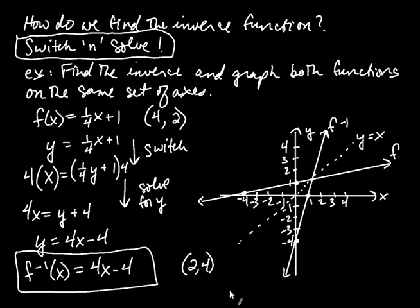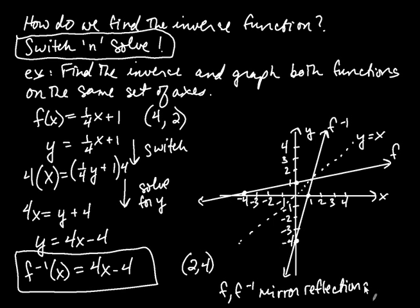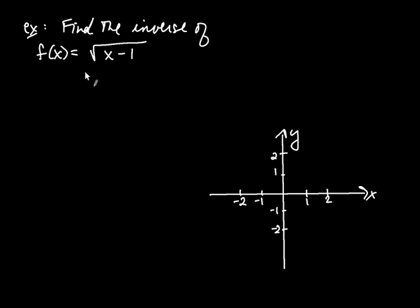Let's write that down: f and f⁻¹ are mirror reflections across the line y = x. Now that we know how to find the inverse and understand how they're related graphically, let's try another example that's a little more complicated. Let's find the inverse of f(x) = √(x − 1).